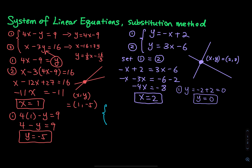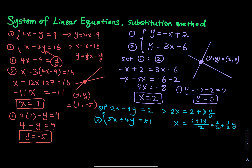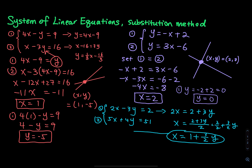The next system is 2x minus 3y equals 2 and 5x plus 4y equals 51. I will rewrite equation 1: 2x equals 2 plus 3y. Dividing both sides by 2, x equals 1 plus three-halves y. This is the rewritten first equation, and I am going to plug this x into the second equation.